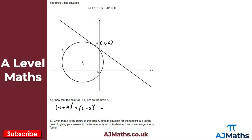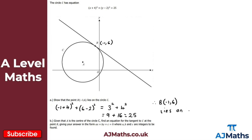Evaluating: minus one plus four is three, so we get three squared. Six minus two is four, so we get four squared. This is actually a Pythagorean triple: nine plus sixteen equals twenty-five, which is exactly what we needed. Therefore B, which is minus one, six, lies on the circle C.